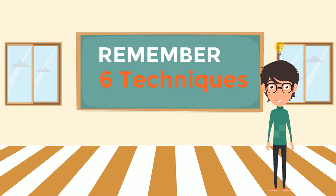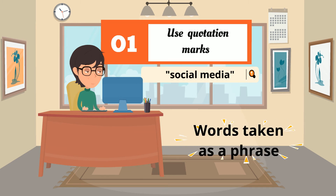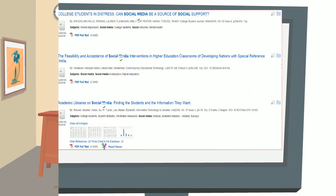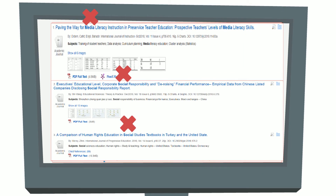Remember these six techniques. First, use quotation marks to search terms as one phrase. This command will retrieve documents with terms in the exact order — for example, retrieving documents containing "social media" and not social and media appearing separately, as these may be irrelevant to your information needs.